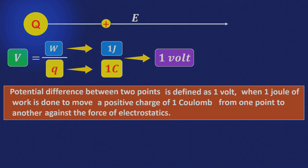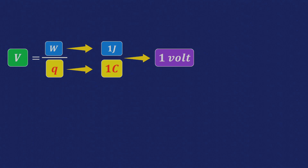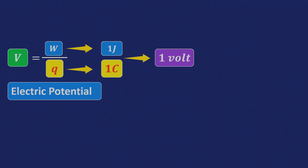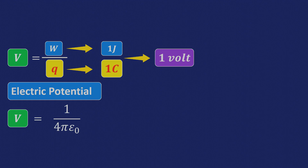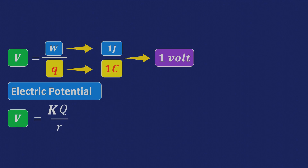In addition to this, we have also derived the formula to calculate the electric potential at a given point due to a point or source charge, which can be expressed as V equals 1 upon 4 pi epsilon naught into Q by R. For convenience, we denote 1 upon 4 pi epsilon naught as constant K, giving us the simplified form V equals KQ by R, where R is the distance between the point charge and the point where we want to calculate the electric potential. It is important to note that potential difference V is a scalar quantity.